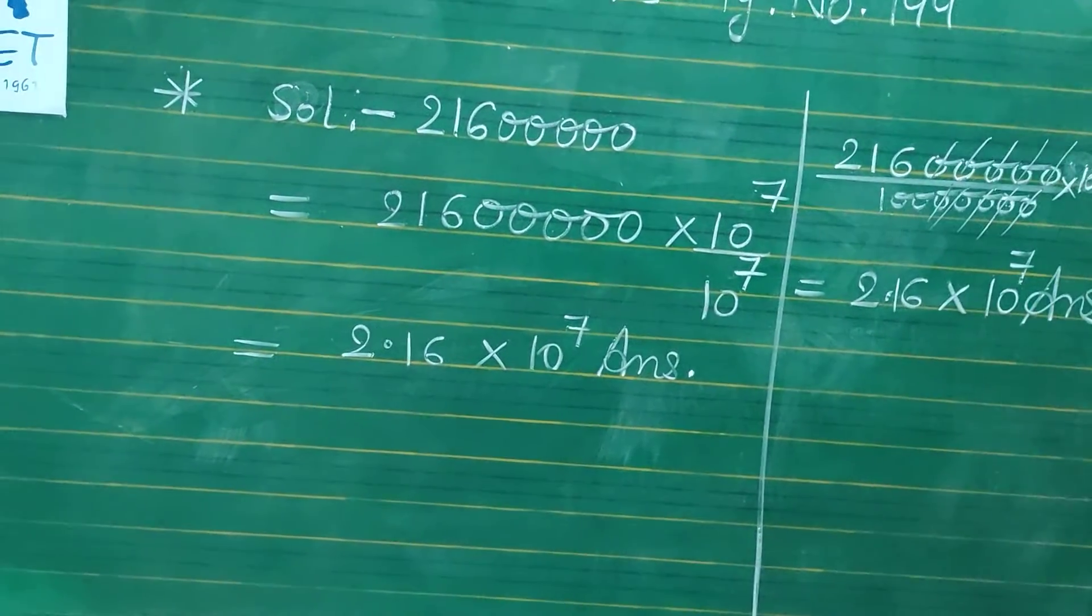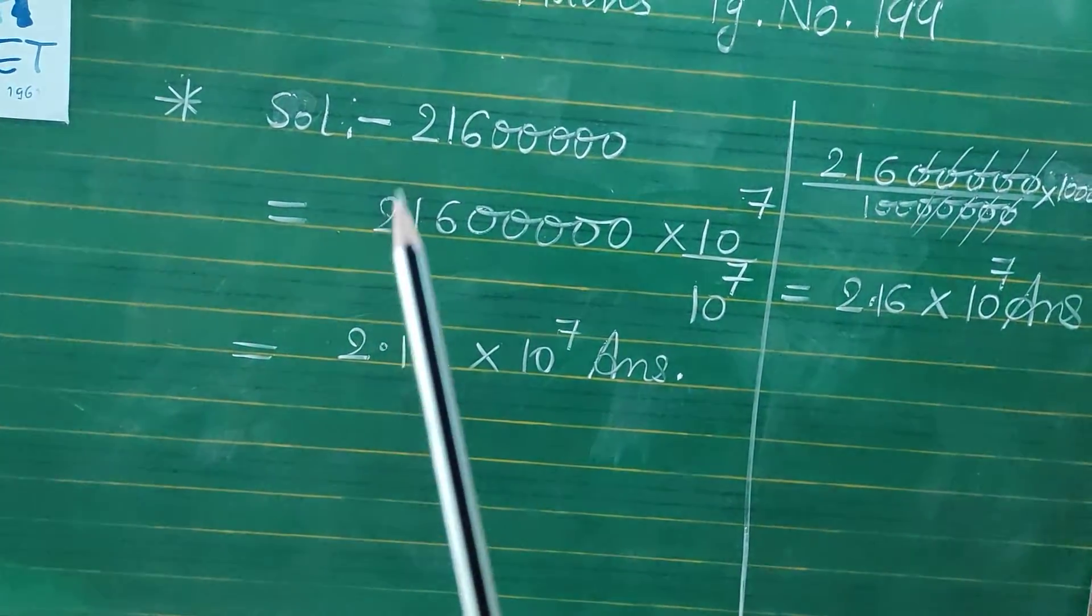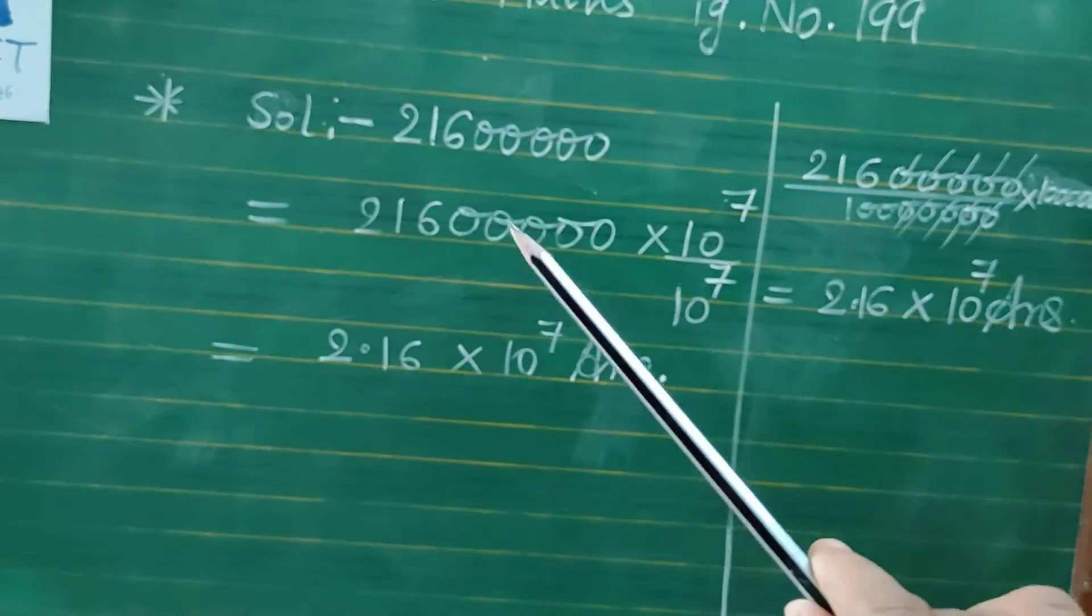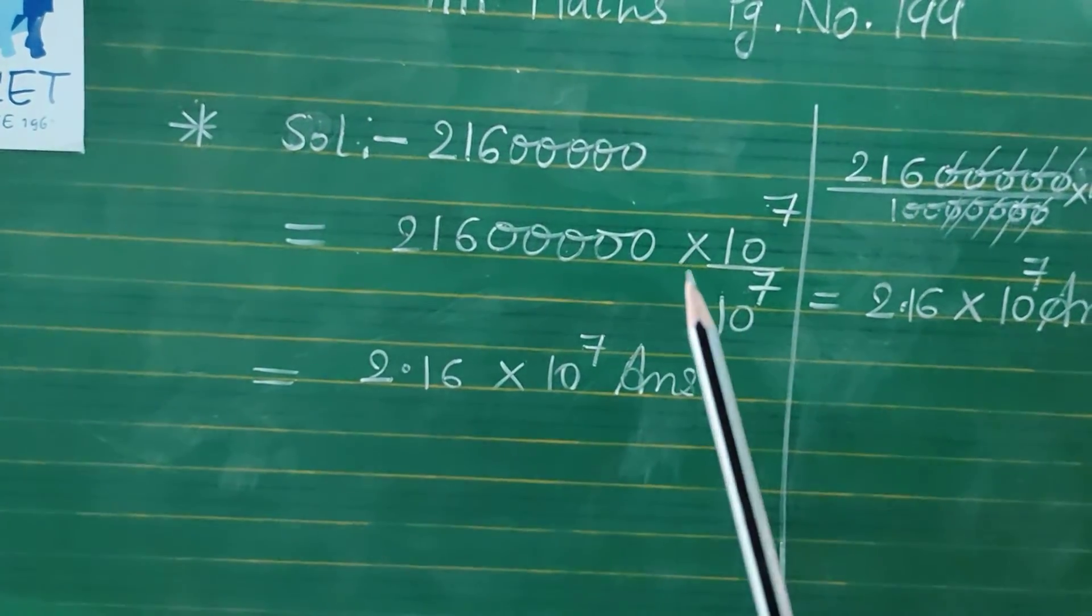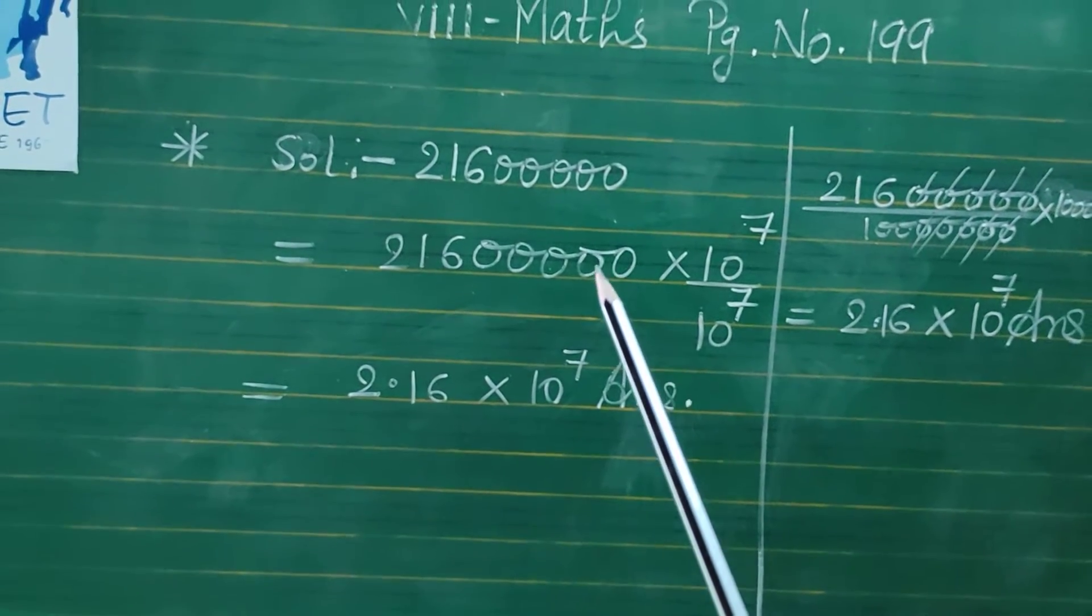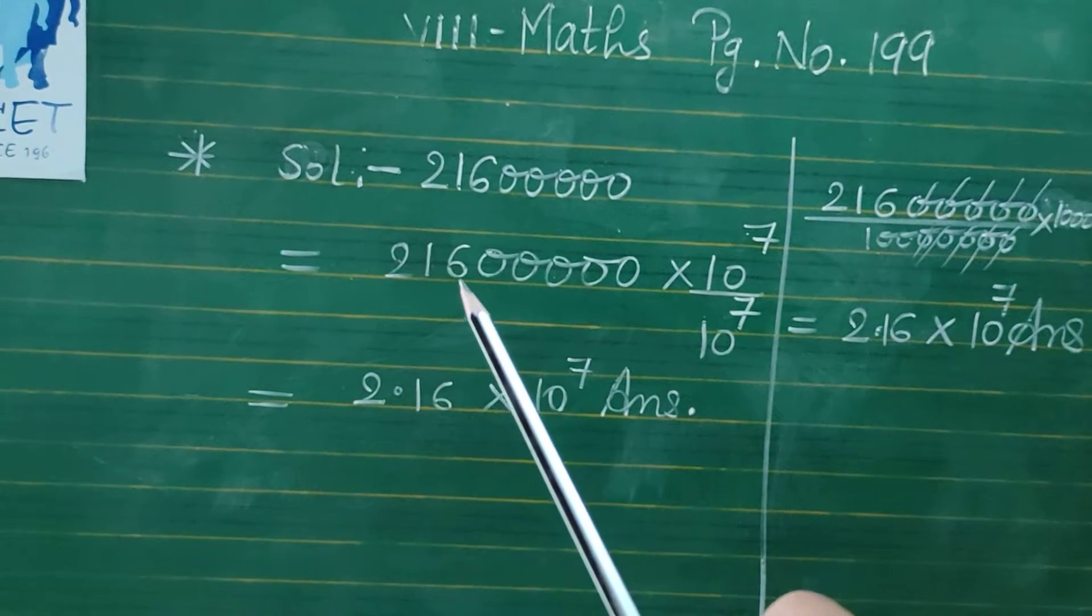So in standard form we want decimal after 1 digit. You can see here, now you will assume decimal is here. So 1, 2, 3, 4, 5, 6, 7.